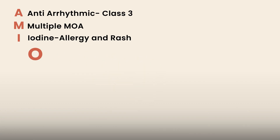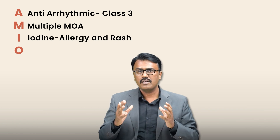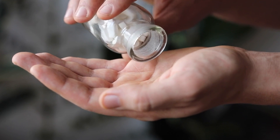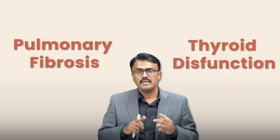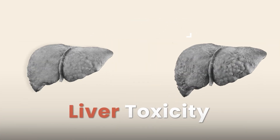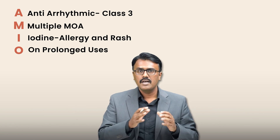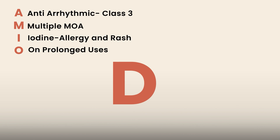The next one is O. On long-term or prolonged usage, the drug is known to produce: number one, pulmonary fibrosis; number two, thyroid dysfunction — both hypo and hyperthyroidism — and also liver toxicity. But the most commonly asked in your exam are pulmonary fibrosis and thyroid dysfunction.